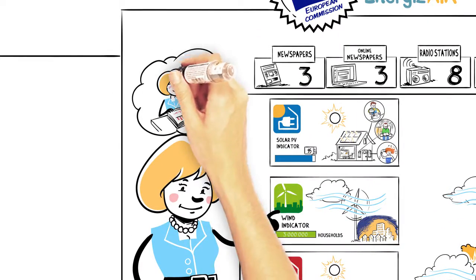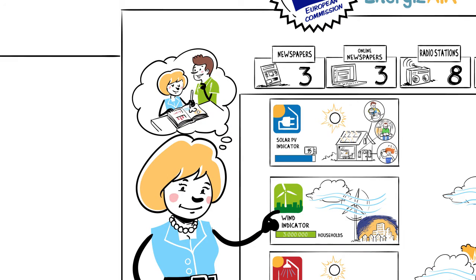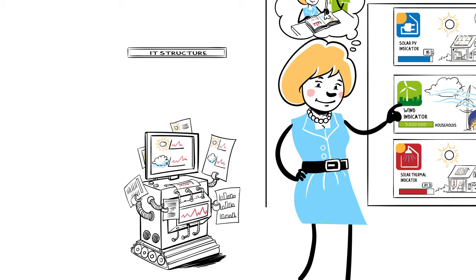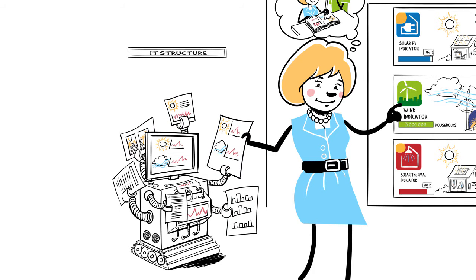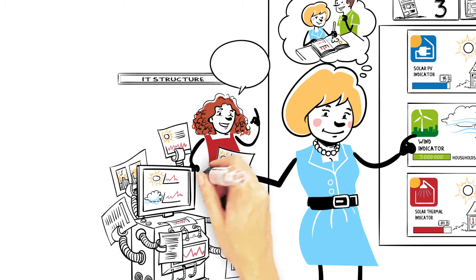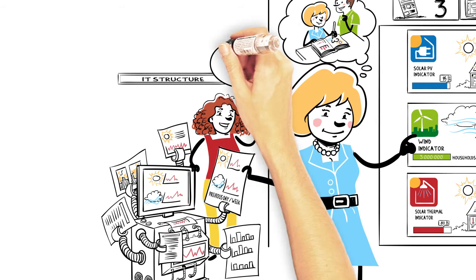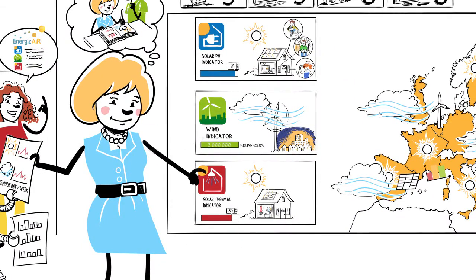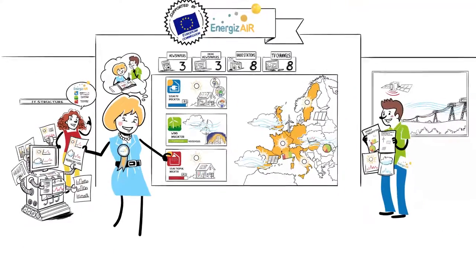Weather anchors have been trained about this new part of their job and thanks to a powerful IT structure, they automatically receive the indicators for the previous day or week. This information is supplemented with tips from Energizer partners explaining what the data means. The weather anchors then present the indicators to the audience and become the best ambassadors of the project.